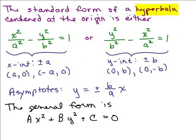Here, remember the standard form of a hyperbola centered at the origin is either x squared over a squared minus y squared over b squared equals 1, or y squared over b squared minus x squared over a squared equals 1. We have the X intercepts if it's in the first form, Y intercepts in the second form. Asymptotes are the same in either case. The general form means you have something of this form: A x squared plus B y squared plus C equals 0, where A, B, and C are constants and usually we'll make those integers.